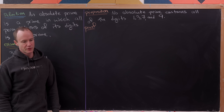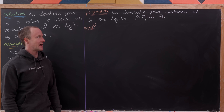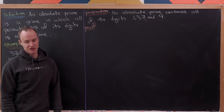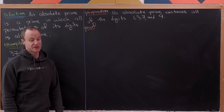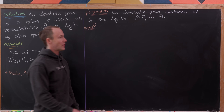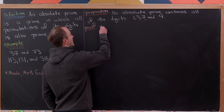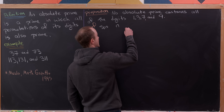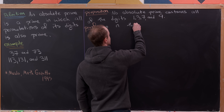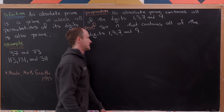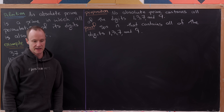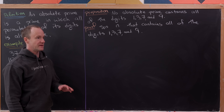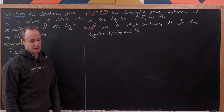The first result we're going to prove is that there is no absolute prime that contains all of the digits 1, 3, 7, and 9. That's pretty interesting to start with. So let's suppose that we have a number n that contains all of the digits 1, 3, 7, and 9, and we want to show that this cannot be an absolute prime.